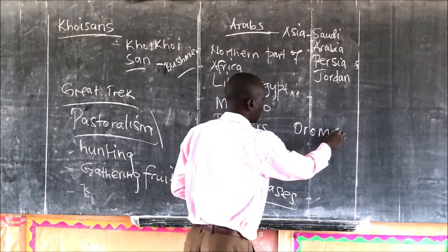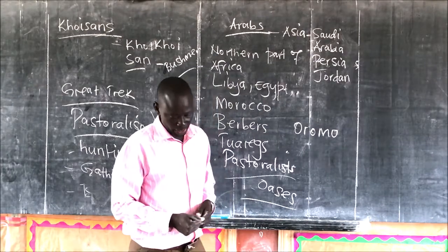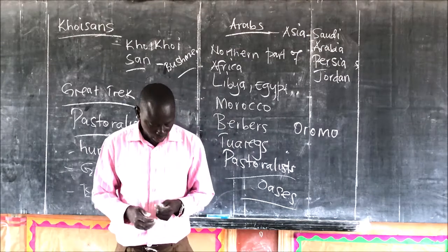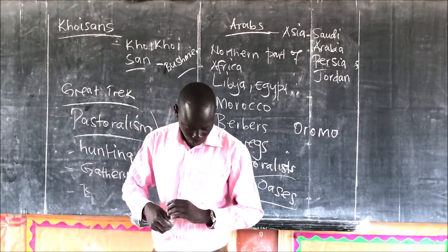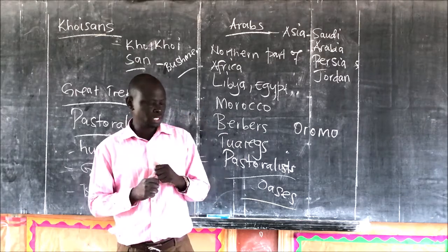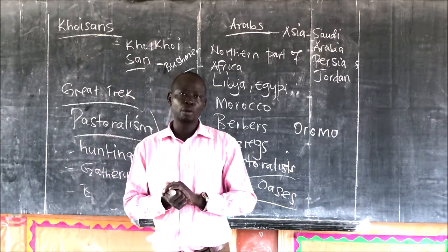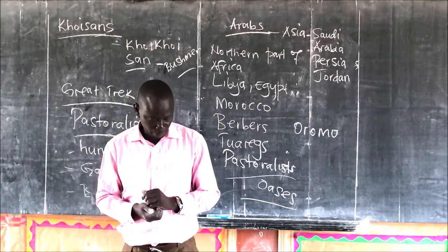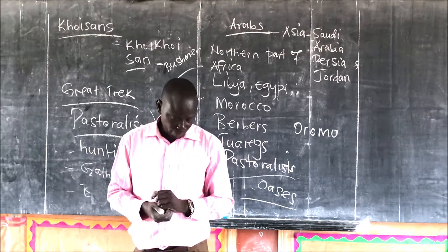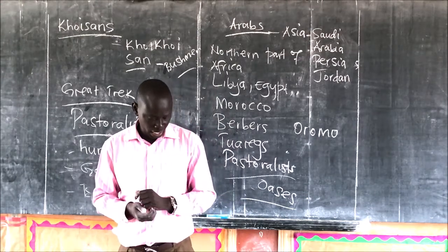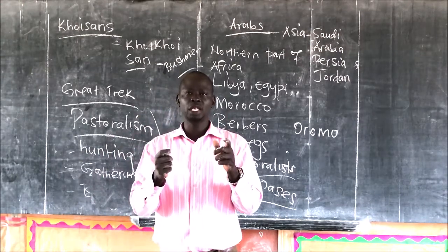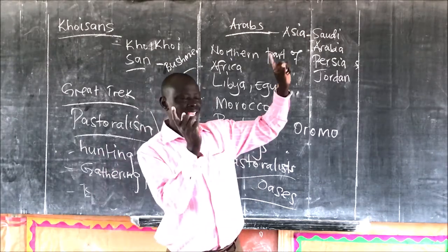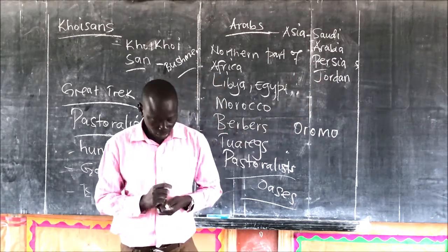We have talked of the Semites, who have mixed blood of the Arabs, Africans, and the Jews. In Uganda we gave the example of the Nubians — if you want to find Nubians in Uganda you can go to Bombo; it is said they were brought by President Idi Amin. Then we have the Hausas of Nigeria as another example. When asked to give an example of a tribe under the Semites in West Africa, we have the Hausas.